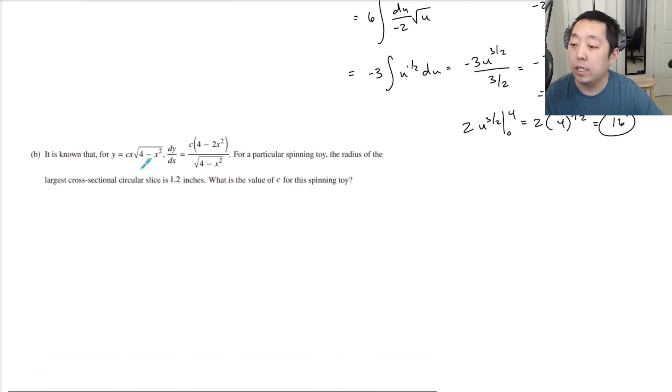Part (b): It is known that y equals that and dy/dx = c(4-2x²)/√(4-x²). For this particular spinning toy, the radius of the largest cross-sectional slice is 1.2 inches. What is the value for c? Okay, they're saying that the derivative is that.